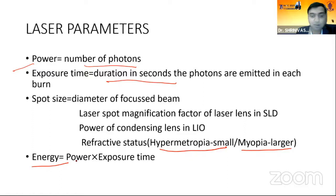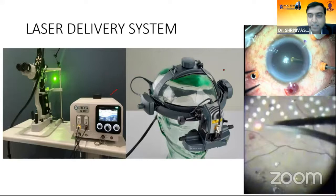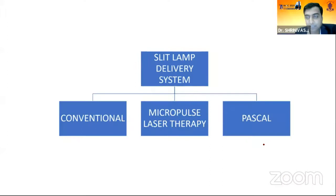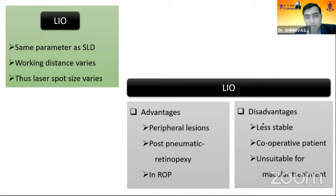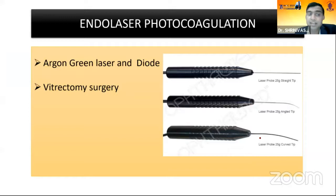The various laser delivery systems include slit lamp-based delivery, the laser indirect ophthalmoscope (LIO), and the endo laser used during vitrectomy. Slit lamp delivery has evolved from conventional to multi-spot laser and micropulse laser therapy, with the pattern scan laser first coined as PASCAL. LIO advantages include treating peripheral lesions, post-pneumatic retinopexy, and ROP cases, though it is less stable and requires a cooperative patient. Endo photocoagulation uses green and diode lasers.